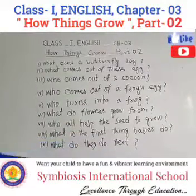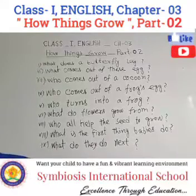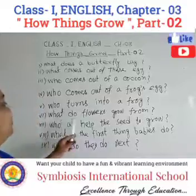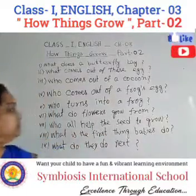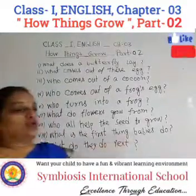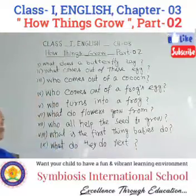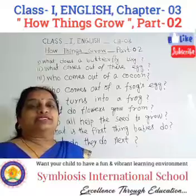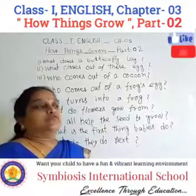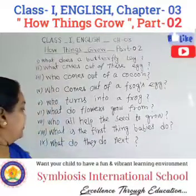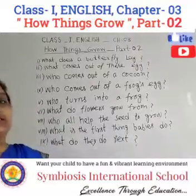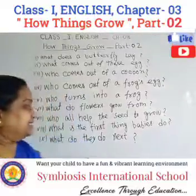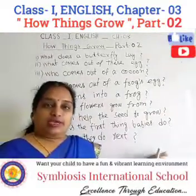Who comes out of the egg? Tadpole. Who turns into a frog? Tadpole. What do flowers grow from? What is needed for a seed to grow? Rain and sun. What is the first thing babies do? The first thing babies do is grow. What do they do next? They begin to walk and talk.